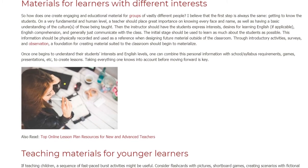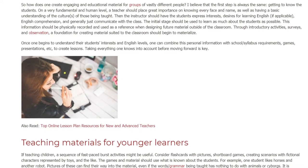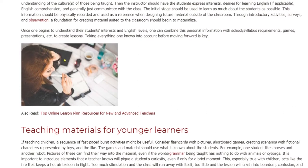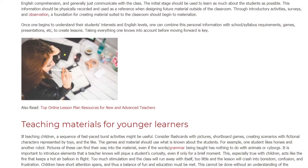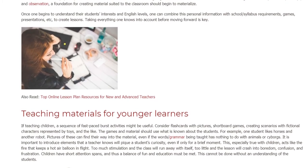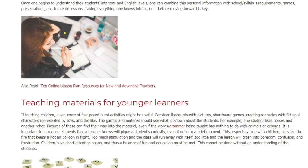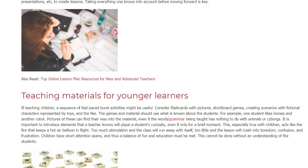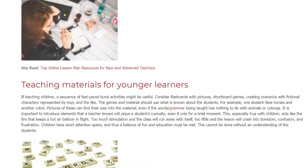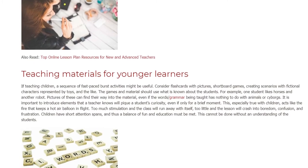Taking everything one knows into account before moving forward is key. If teaching children, a sequence of fast-paced burst activities might be useful. Consider flashcards with pictures, short board games, creating scenarios with fictional characters represented by toys, and the like. The games and materials should use what is known about the students. For example, one student likes horses and another robots. Pictures of these can find their way into the material, even if the words or grammar being taught has nothing to do with animals or cyborgs.